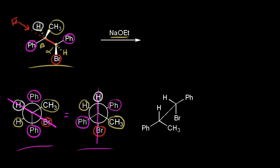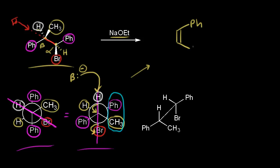From this Newman projection, you can draw the product. A strong base takes the beta proton, those electrons move in to form the double bond, and at the same time the electrons come off onto the bromine to form the bromide anion. From the Newman projection, the phenyl group and the methyl group end up on the same side of the double bond. On the other side of the double bond, we have the hydrogen and the other phenyl group.